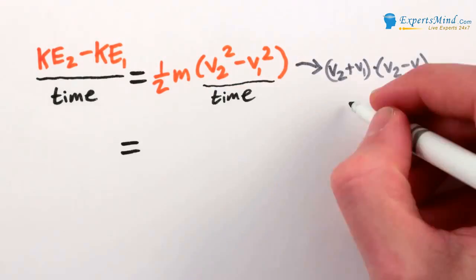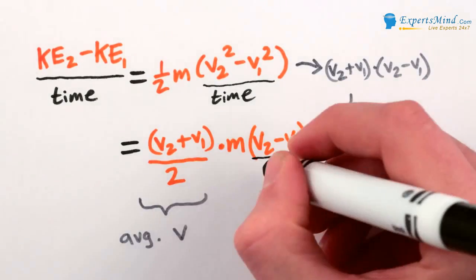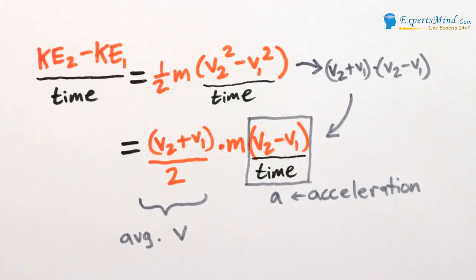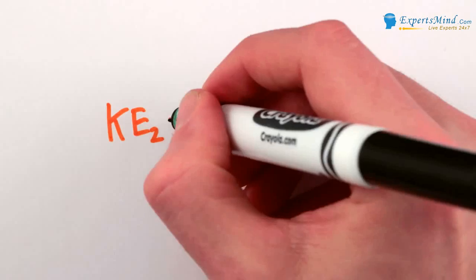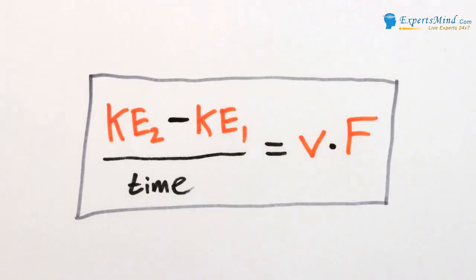Some clever algebra can rearrange this expression to become the average velocity times m times the change in velocity. But a change of velocity over time is just an acceleration, and mass times acceleration is equal to the force on the object, so the change in kinetic energy of an object over time is just velocity times force.